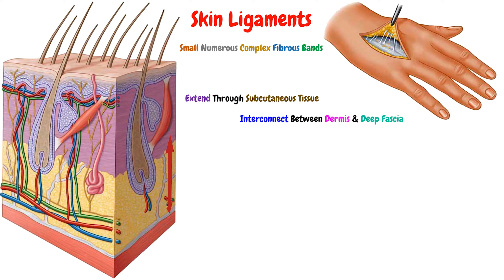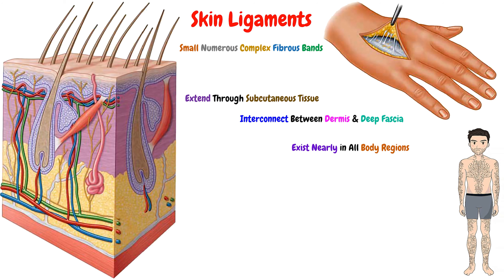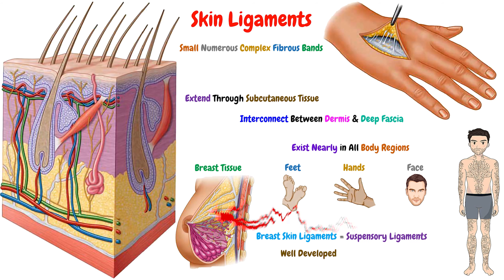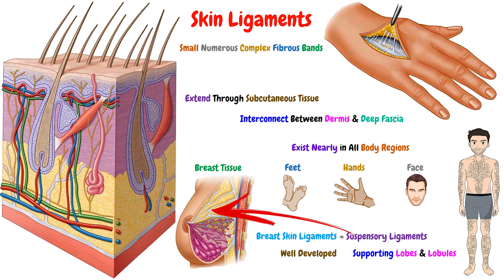These skin ligaments exist nearly in all body regions, especially in the face, the hands, the feet, and in the breast tissue. The breast skin ligaments are well developed and form what we call the suspensory ligaments, which help in supporting the lobes and the lobules of the mammary gland.